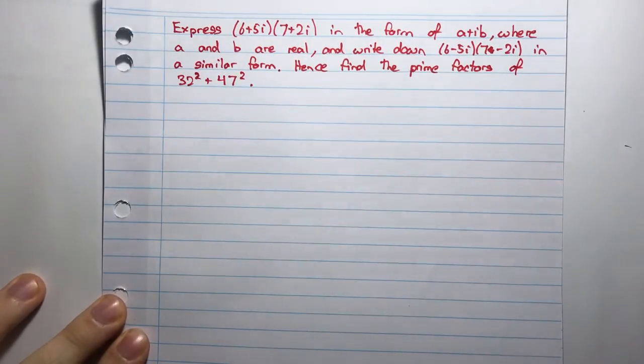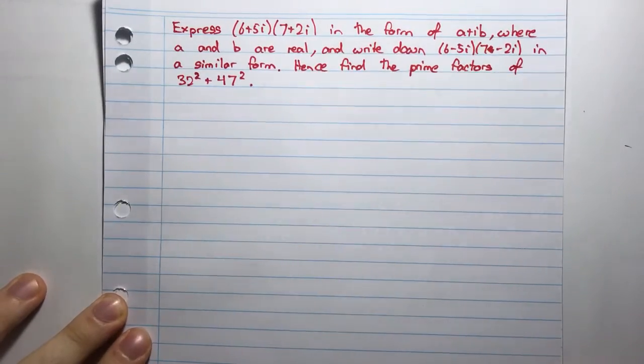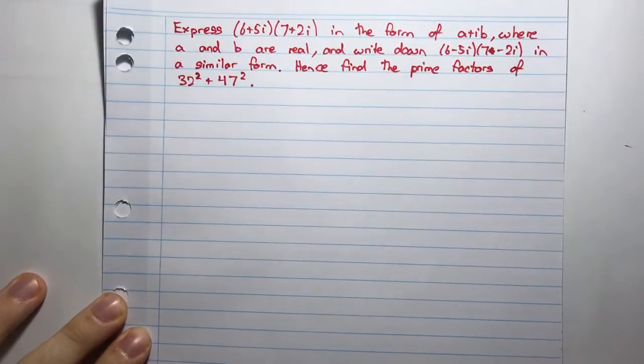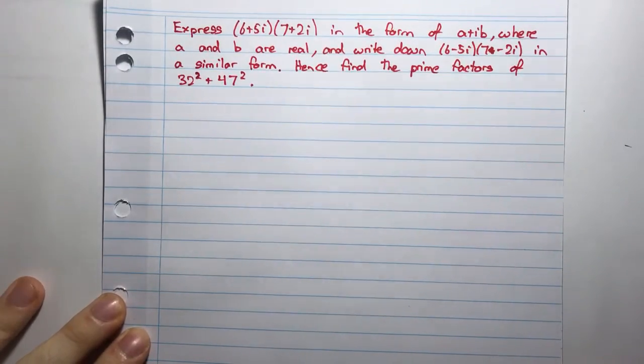Express (6+5i)(7+2i) in the form of a+ib, where a and b are real, and write down (6-5i)(7-2i) in a similar form. Hence, find the prime factors of 32² + 47².